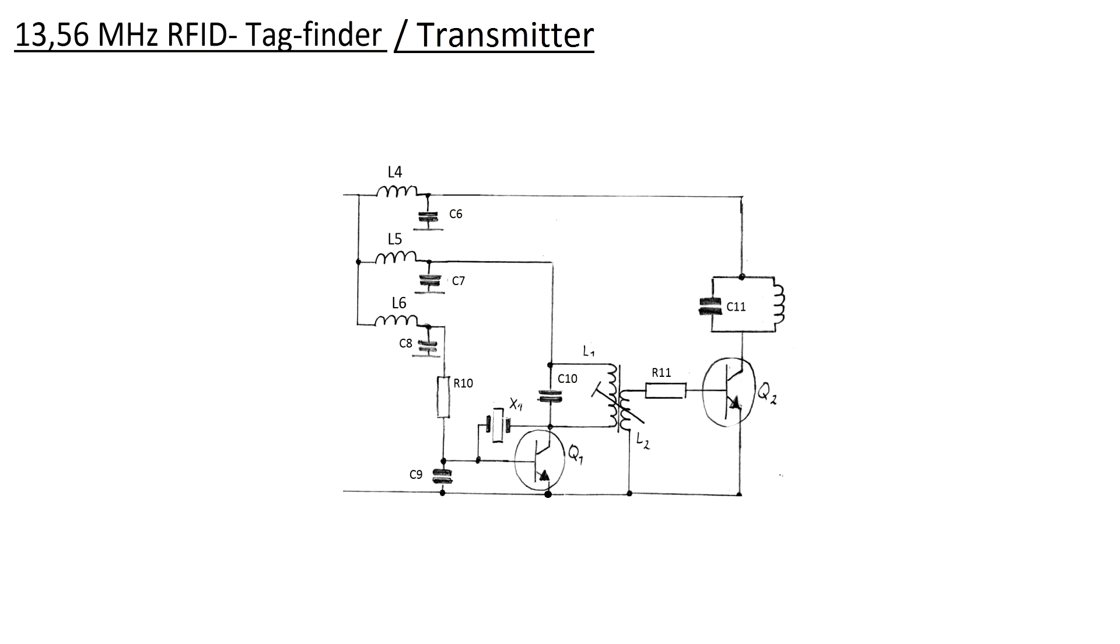The RF section of the circuit can be refitted to serve as a relatively powerful mobile 13.56 MHz transmitter. To do that, the detector coil is removed and instead replaced by a second RF transformer, which is then connected to an antenna.